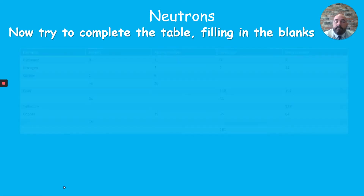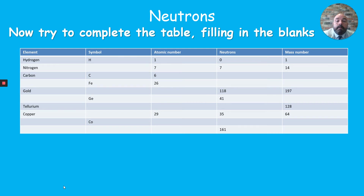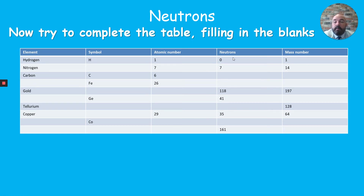Here's another task — there's a table where all information can be obtained from the periodic table, including element name, symbol, atomic number, mass number, and neutron number (mass number minus atomic number). The first one is done: hydrogen has symbol H, atomic number 1, mass number 1, and 0 neutrons. Sketch the table and complete it — it will take about 5 minutes to sketch and 5 to 10 minutes to complete. Pause the video and press play when you're done.